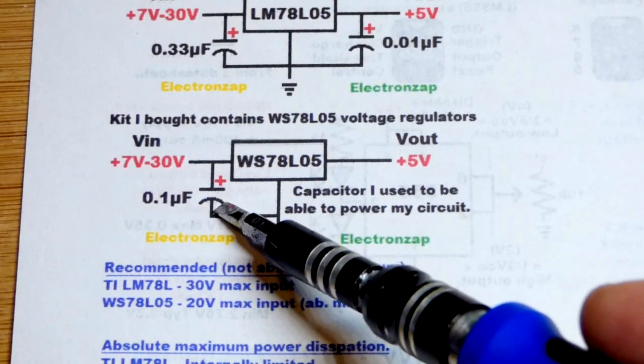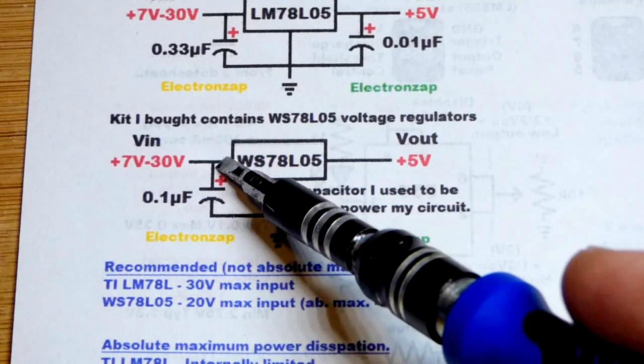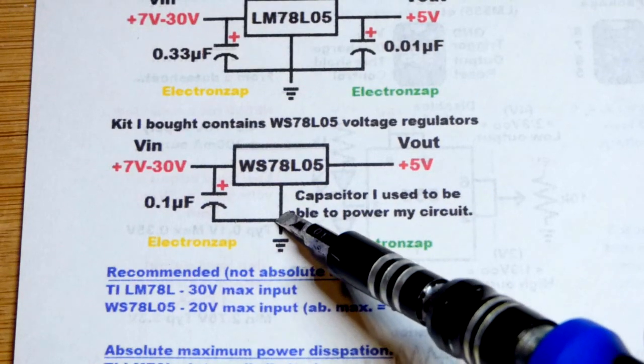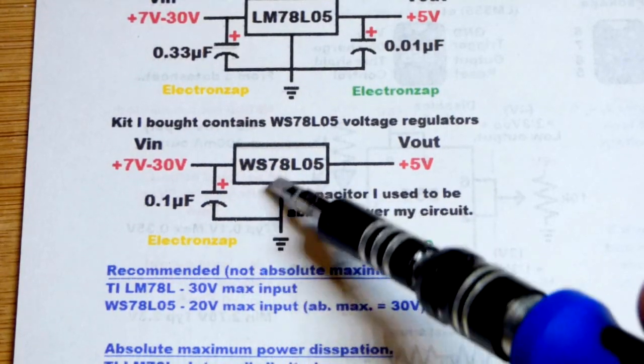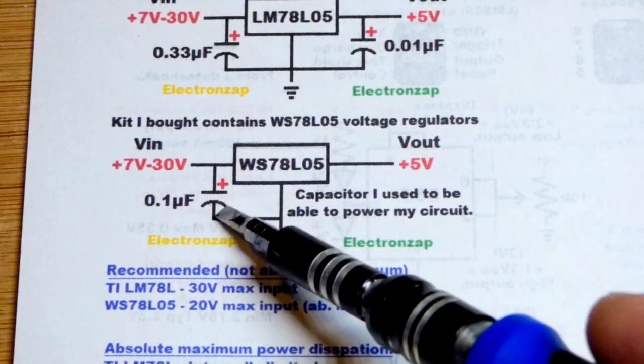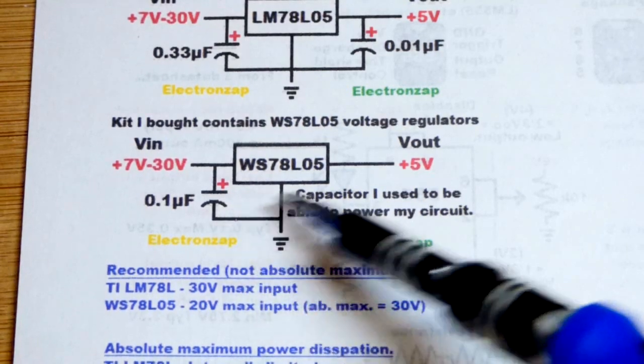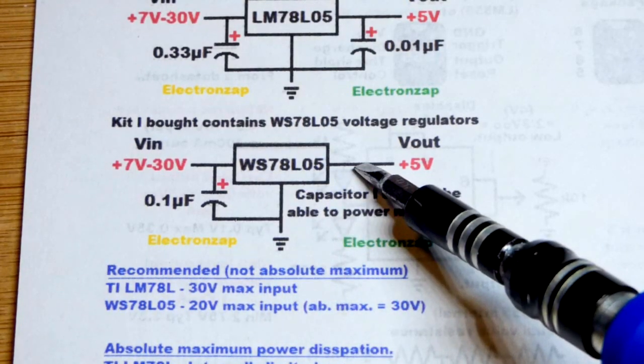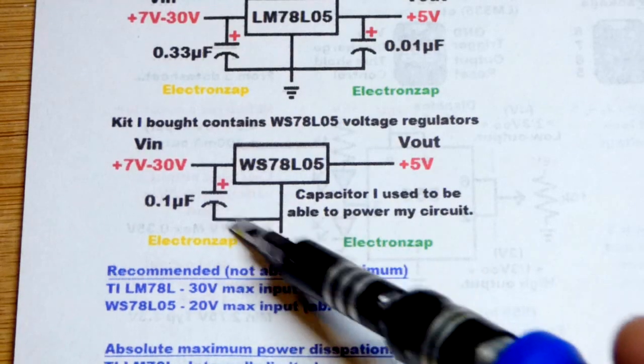a capacitor from the full positive supply to ground right here. That's a couple pins on the integrated circuit, because I'm not getting the full 5 volts. I'm getting like half of it if I don't have that capacitor there. So we need to stabilize the input.